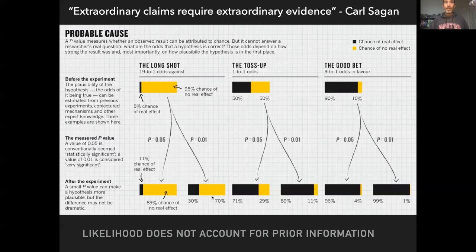So this leads us to some questions. How can we incorporate prior information in our analyses? How do we calculate the probability of the model given the data? And if we could do that, does it give us more intuitive statistics, such as asking the probability that a hypothesis is correct or probability that a true parameter falls within an interval? And so that's going to set us up for, the short answer with Bayes is yes. And we're going to next dive into where that comes from.